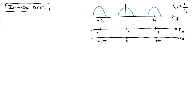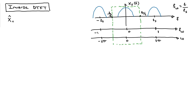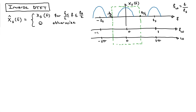We're going to start with X_S(F), the spectrum of the sampled signal. What I'm going to do is strip out one window from this signal, running from -Fs/2 to Fs/2. This little windowed signal — zero everywhere outside, a bump inside — I'll call X̂_S(F). It's just equal to X_S(F) for |F| < Fs/2, and zero otherwise.